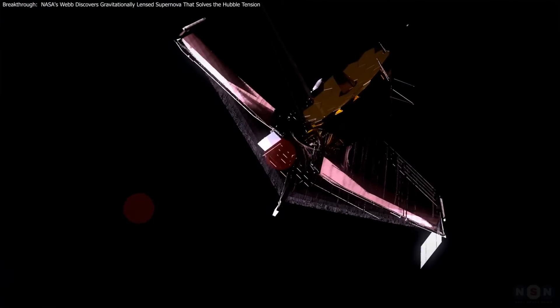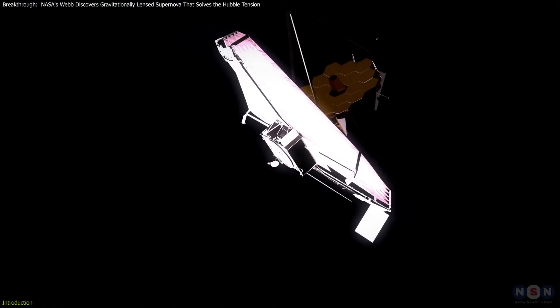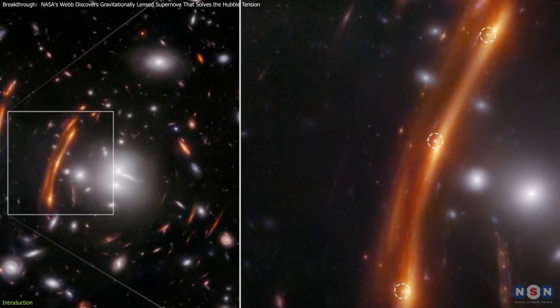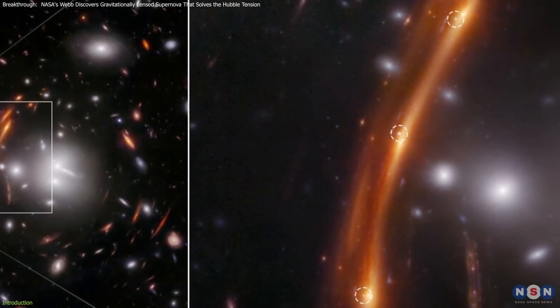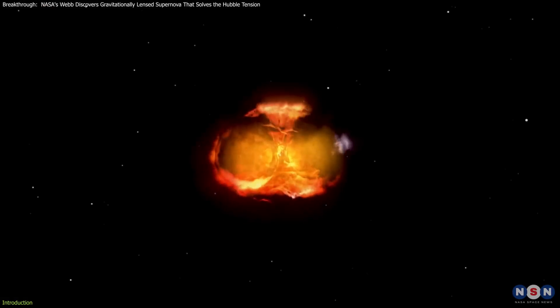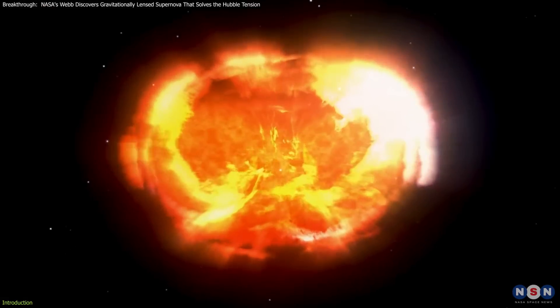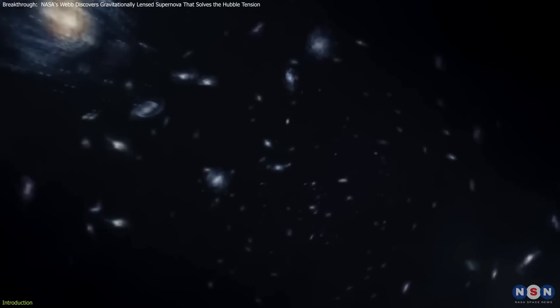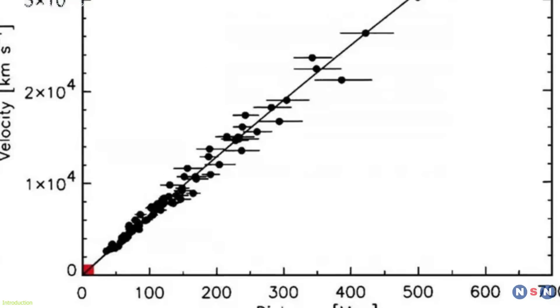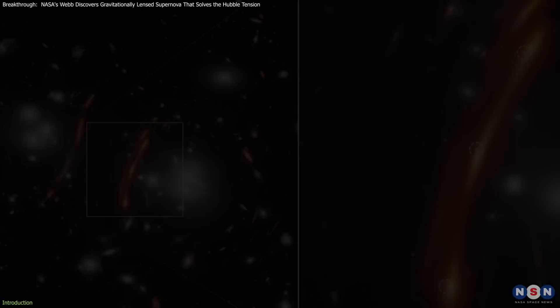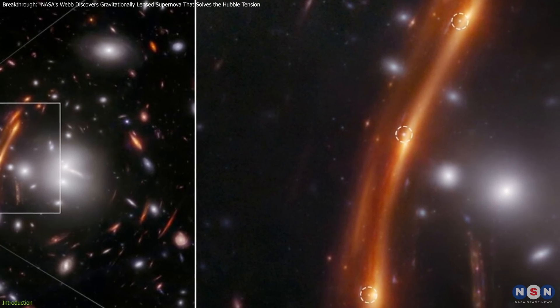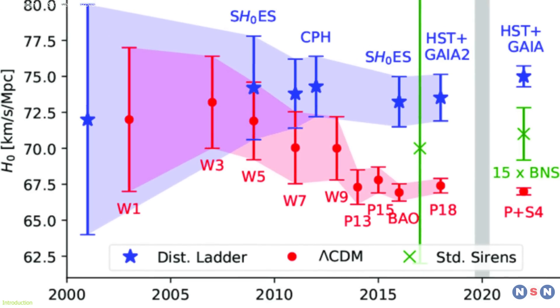Scientists have made an extraordinary discovery with NASA's James Webb Space Telescope: Supernova Hope. This rare, gravitationally-lensed Type 1a supernova is not just another explosion in the universe. It's providing researchers with a powerful new tool to measure the expansion rate of the cosmos, known as the Hubble Constant. Even more exciting, this discovery could help solve the long-standing debate in cosmology called the Hubble Tension.